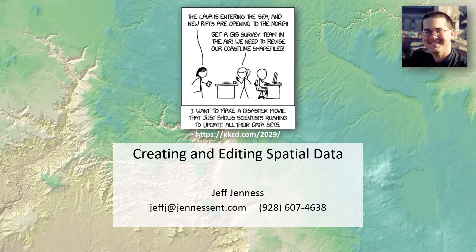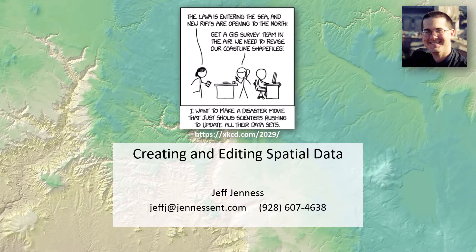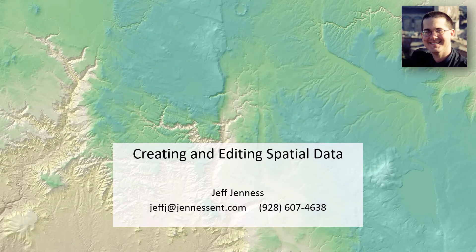We'll also look at how to convert a table of data, like you might get in an Excel worksheet, and turn that into an actual spatial data set. Finally, we'll take a look at how to take images and turn them into spatial data. These images might come from a drone, or maybe some screenshots off the internet. They could be a map or picture you've scanned or photographed. I'll show you how to turn that into actual spatial data you can bring into your map.